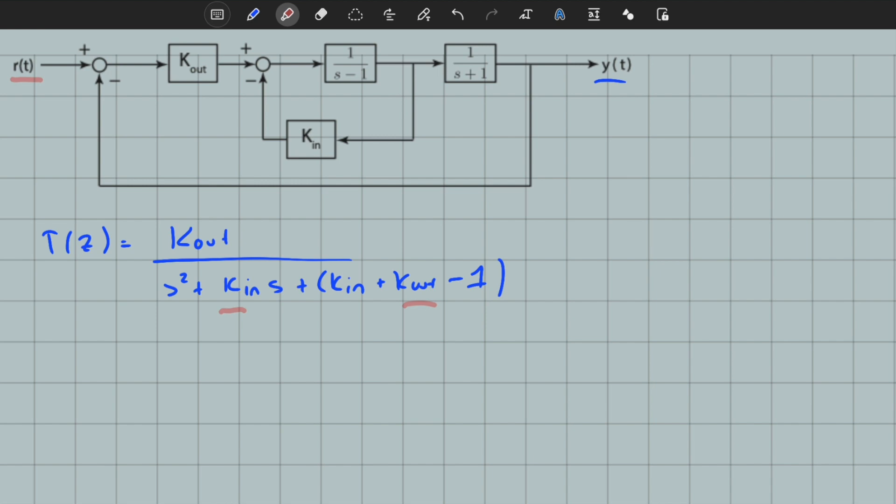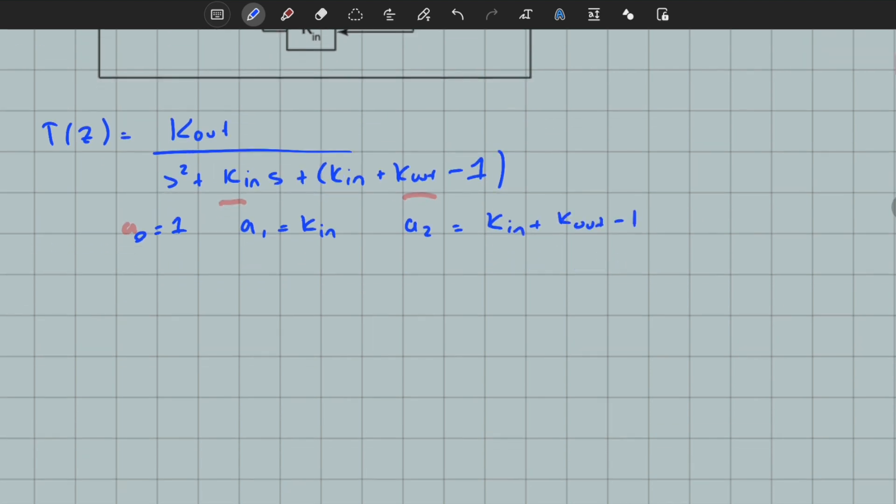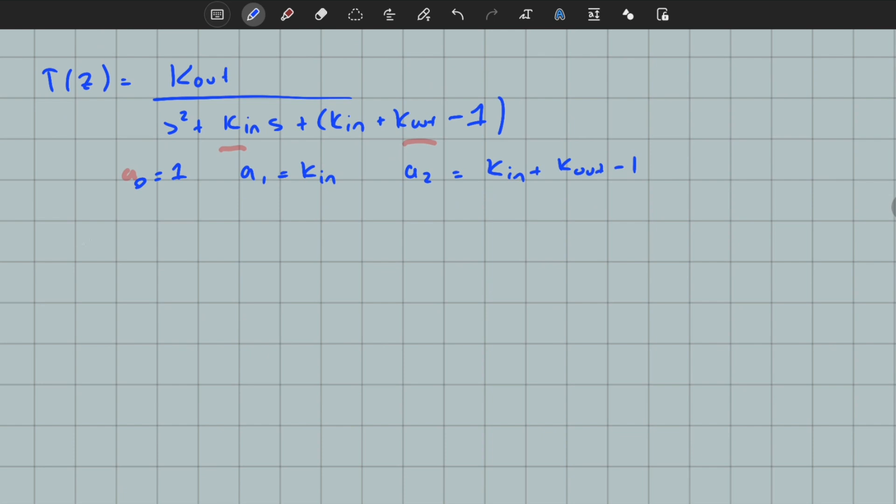For the Routh-Hurwitz table, what are the coefficients? a_0 equals 1, a_1 equals k_in, and a_2 equals k_in plus k_out minus 1. For the table: s squared, s1, s0. Here we have 1 for a_0, we jump one step, so this equals k_in plus k_out minus 1.